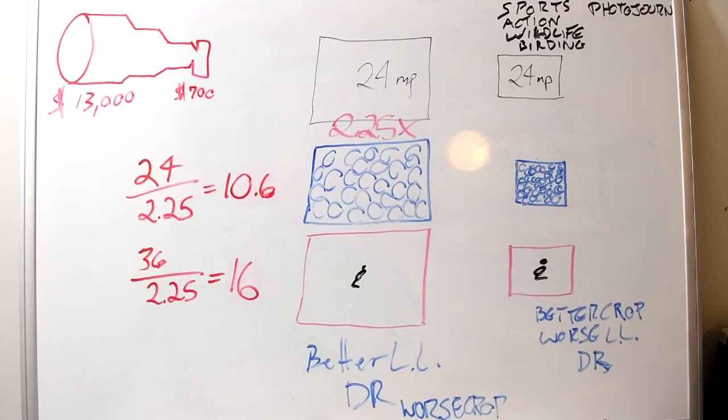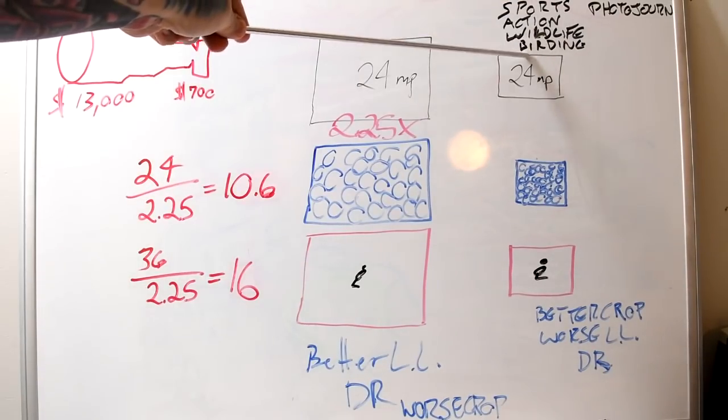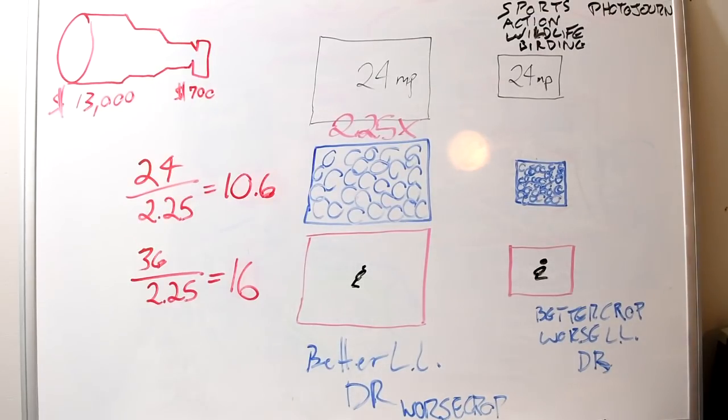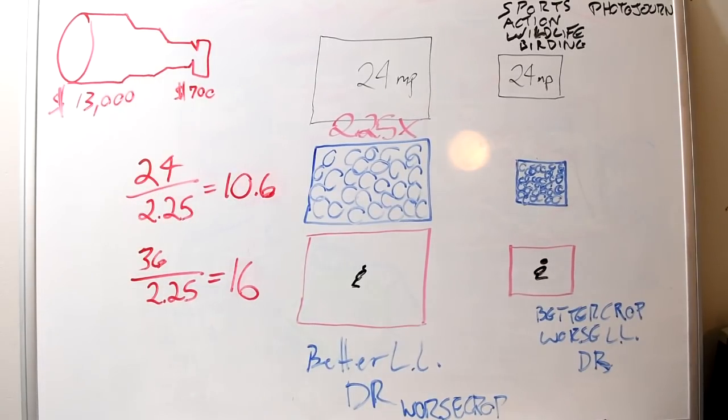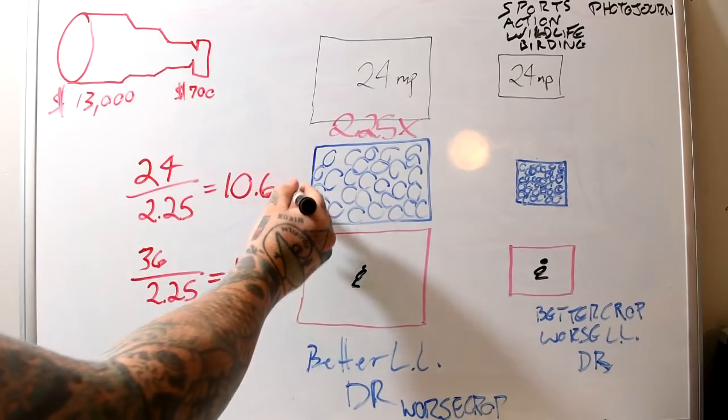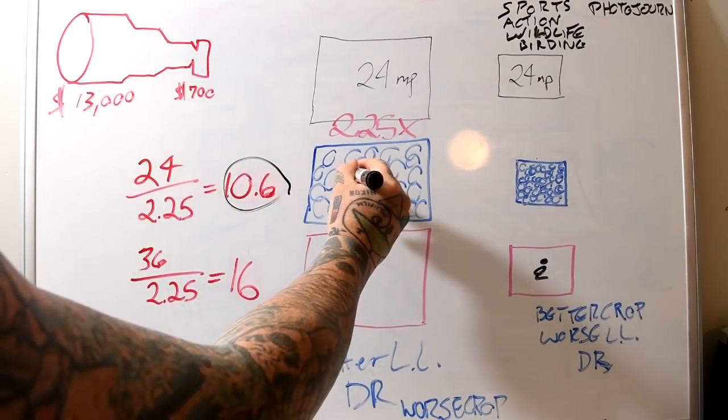Oh my goodness. Now here for sports, action, wildlife, birding, and photojournalism, where the full-frame sensor at 24 megapixels is 2.25 times worse than our crop sensor. How so? Let's take a look at a 24 megapixel sensor. We have to divide that by 2.25. Now check the internet if you like on the math on this because I'm 100% accurate. A 24 megapixel sensor over 2.25 equals, oh my God, 10.6 megapixels.